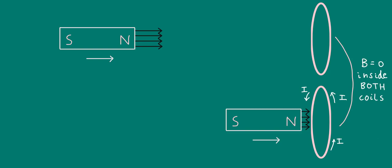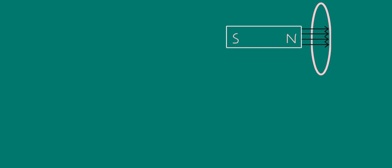If the bar magnet starts close to the coil, its magnetic field lines are poking through the coil. Moving the magnet away to the left would result in the magnetic field in the coil decreasing to zero. How does the coil respond now?